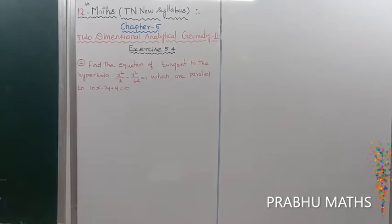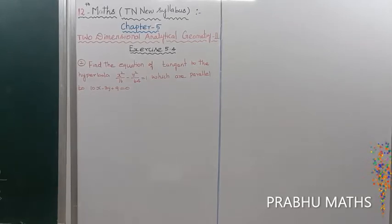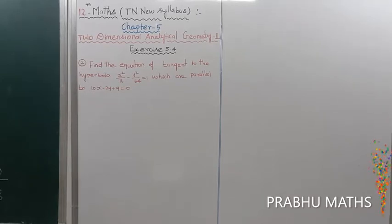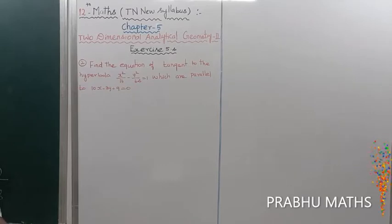x is 5.2. Find the equation of the tangent to the hyperbola x² / 16 minus y² / 64 = 1, which are parallel to the line 10x minus 3y plus 9 = 0.